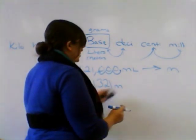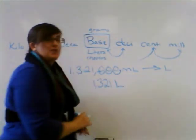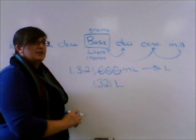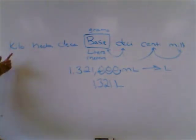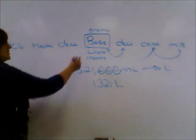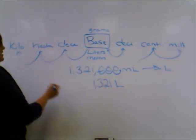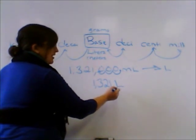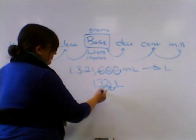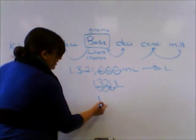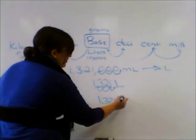That's still a pretty big number. So now we want to take our liters and convert to kiloliters. We jump once from base to deca, once to hecta, once to kilo — three more jumps. So we take the implied decimal point, move it one, two, three places. Now we have 1.321 kiloliters.